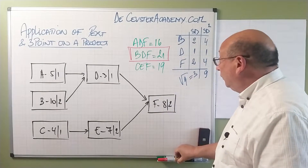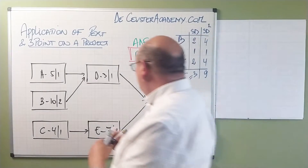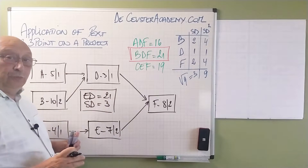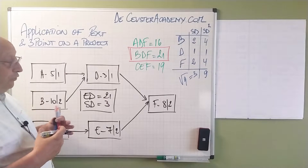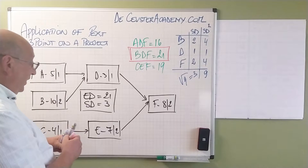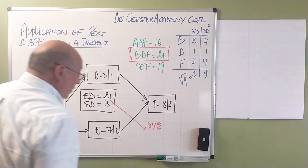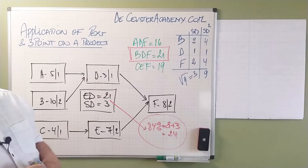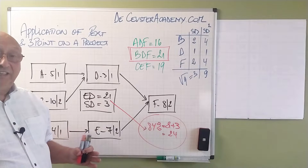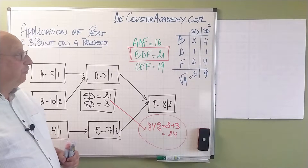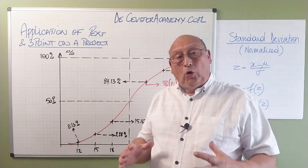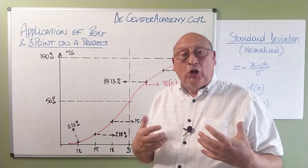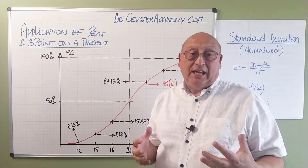For our project, the expected duration is equal to 21 and the standard deviation is 3. Based on that, we can calculate the relationship between duration and probability. When we look at 84% probability, we know that this equals 21 plus 3, which is 24. Basically, it means we have an 84% probability that our project will be finished in less than 24 periods. Once we have found the duration of the project and the standard deviation, we can put that information in a graph.